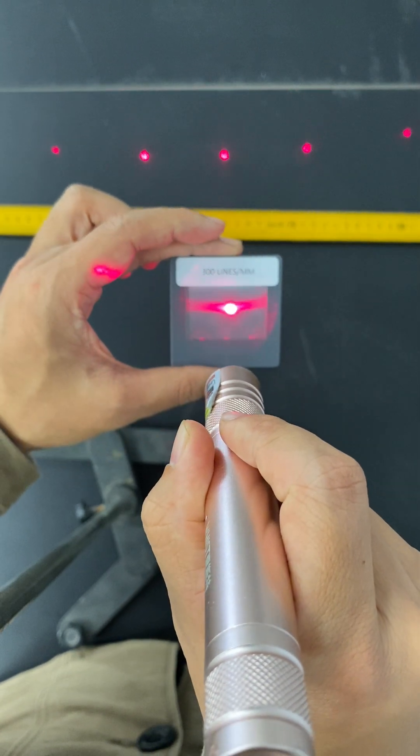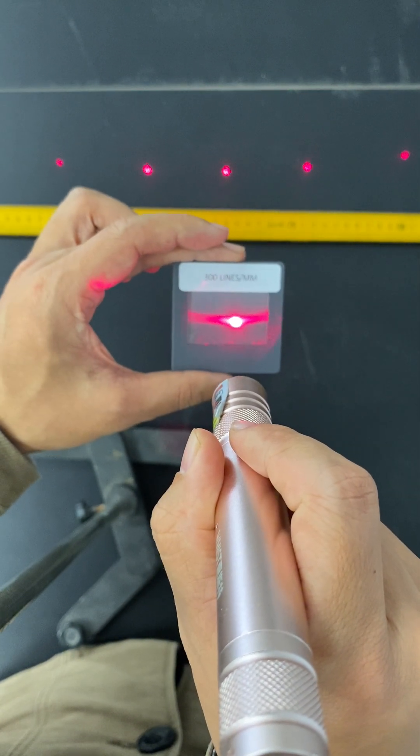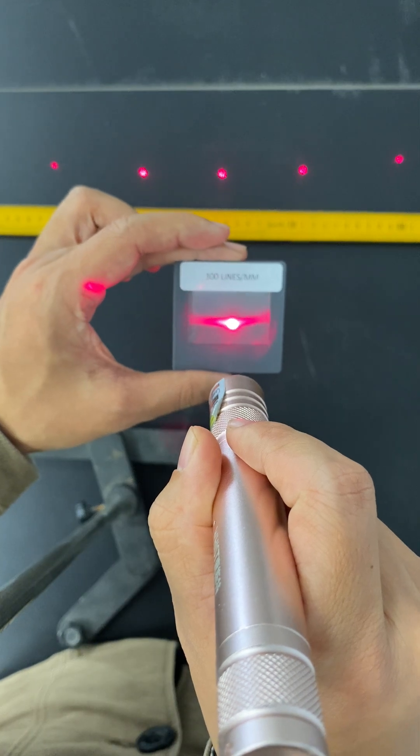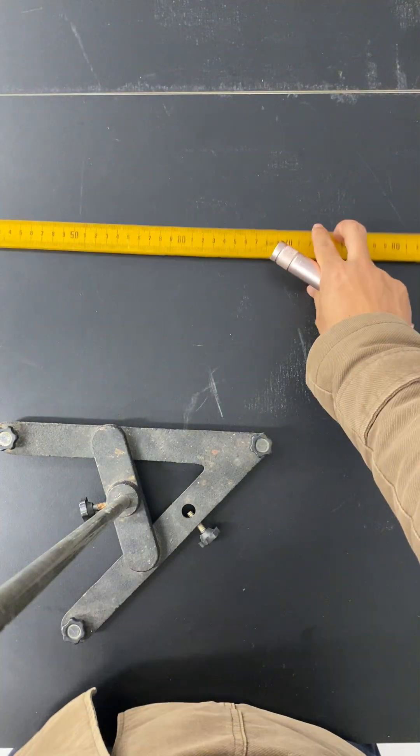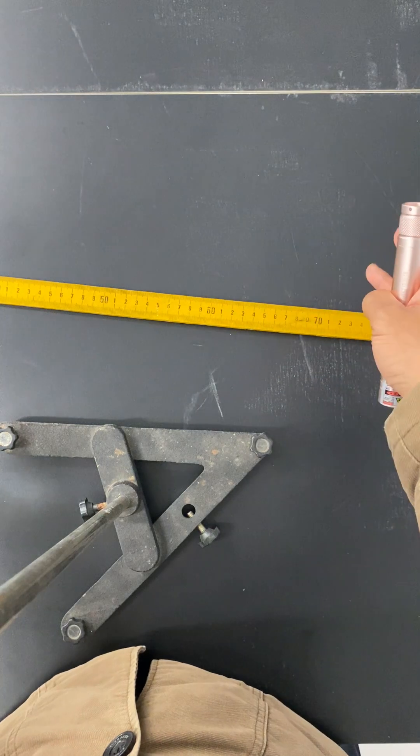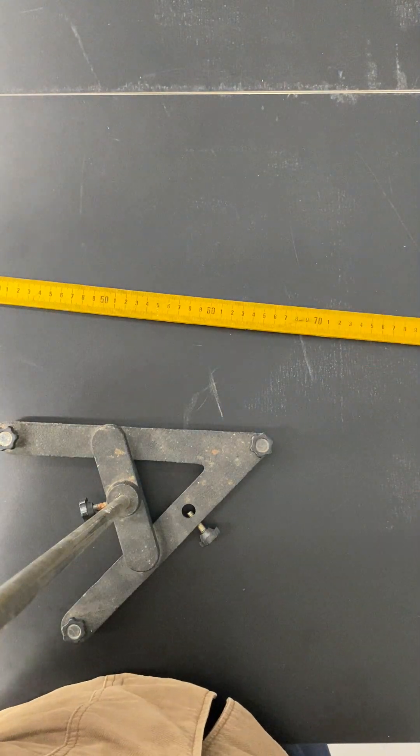You can see that quite a lot of dots, a series of dots, are already formed on the table. By using the millimeter ruler, I can measure the distance between one dot and the second dot.